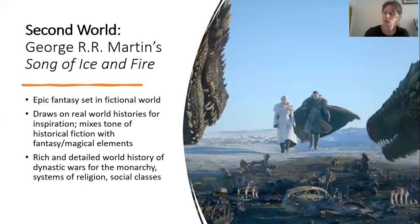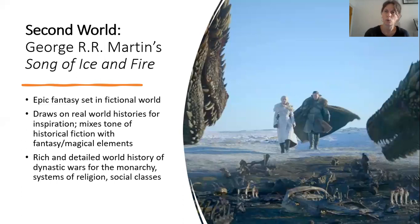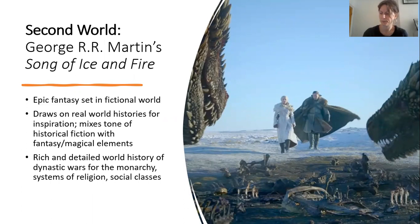On the other hand, George RR Martin's A Song of Ice and Fire is an epic fantasy series set in an entirely fictional world. It is like our own real world in many ways, but it is also explicitly not the same. To create its rich and detailed world history of dynastic wars for the monarchy, George RR Martin draws on real world histories and geographies — European medieval kings and queens, Hadrian's Wall, the fall of Rome — and mixes these elements with fantasy and magic to distinguish it from the real world. So A Song of Ice and Fire is a second world fictional setting.